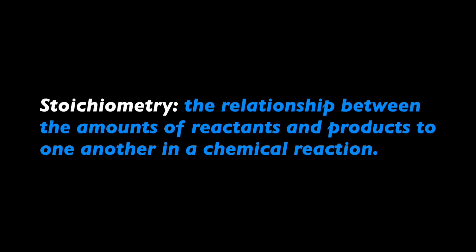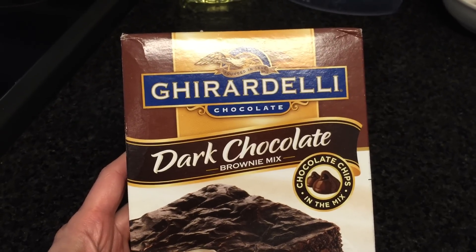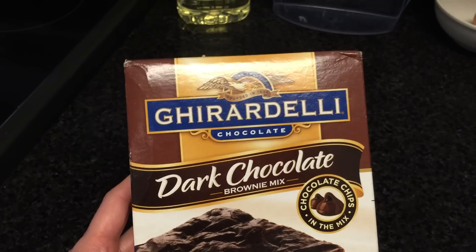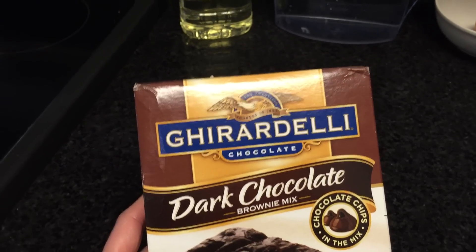Stoichiometry — the numbers game in chemical reactions — can be daunting, but it's nothing more than using correct proportions to predict how much of something is needed or how much of something is going to be made, much like a recipe. Using baking as an example, let's take this brownie mix and try to explain stoichiometry through simple proportions.